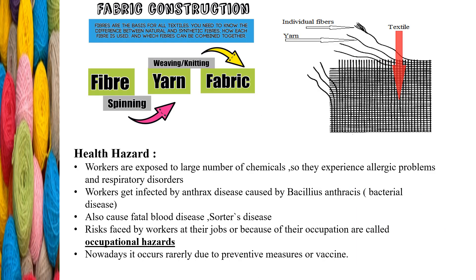If you observe here, you can see the individual fibers. These individual fibers are twisted to form yarn, and many of these yarns are then woven to form fabric. Similarly, in short: fibers are spun into yarn, and yarn by weaving or knitting gets converted into fabric.